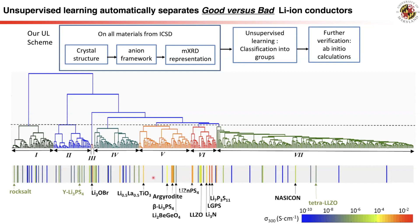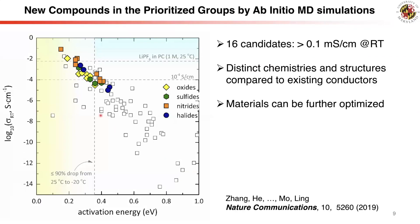Moreover, among the good groups there are some materials without reported ionic conductivity — these become our prioritized targets for further screening. For these unstudied materials in the two groups, we calculate ionic conductivity using ab initio molecular dynamics simulations. The best ion-conducting materials appear in the upper left of the plot, indicating high ionic conductivity and low activation energy. Compared to previously known non-conductors shown as empty symbols, our unsupervised learning is shown to be very effective in identifying good ionic conductor materials.